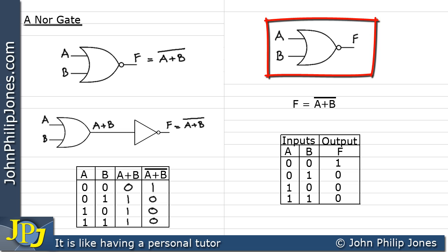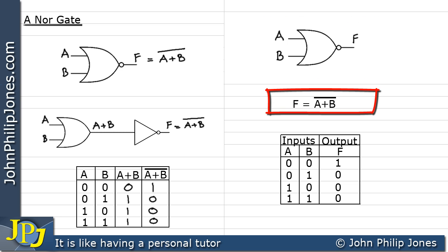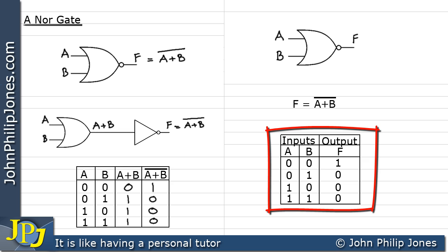This is the symbol for a two input NOR gate, showing the input A and B and the output F. This is the Boolean representation at the output F. And this is the truth table, which defines precisely the logic functionality of a two input NOR gate.